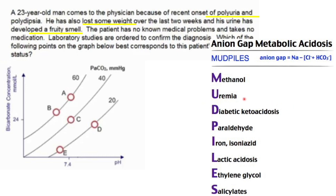Remember the mnemonic MUD PILES - DKA is one of the causes of anion gap metabolic acidosis. Just remember it like that, which means we need to figure out where we fall on the acid-base curve. I'm going to show you a very simple way to approach this.